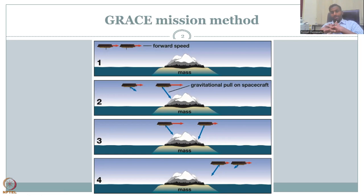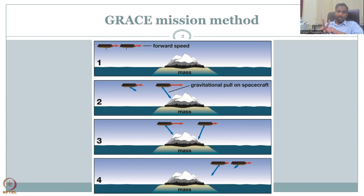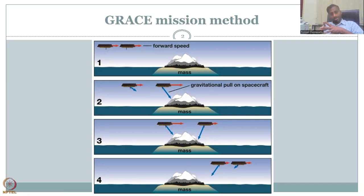Here's the GRACE satellite. Unlike other missions, the GRACE satellite has two satellites together — the mission has two satellites. Very humorously, they are named Tom and Jerry.